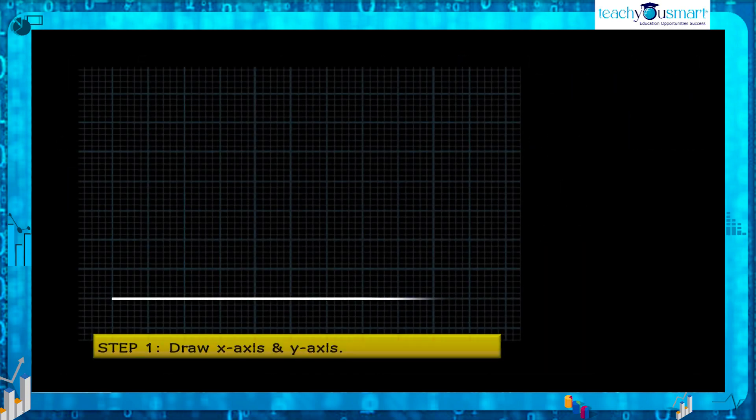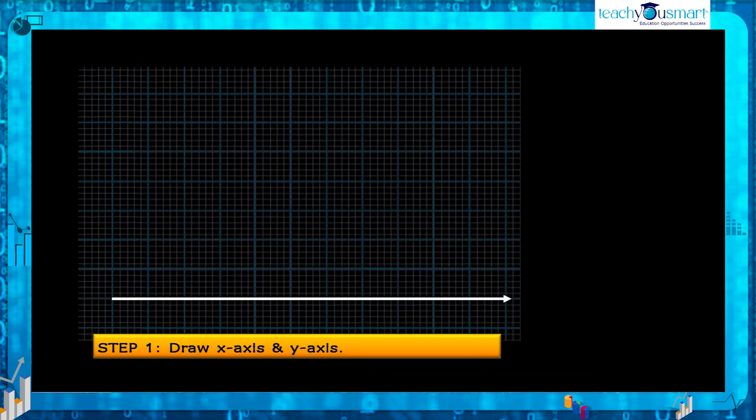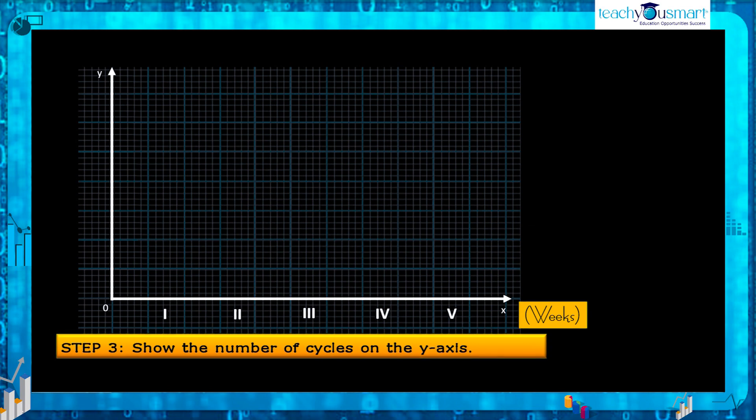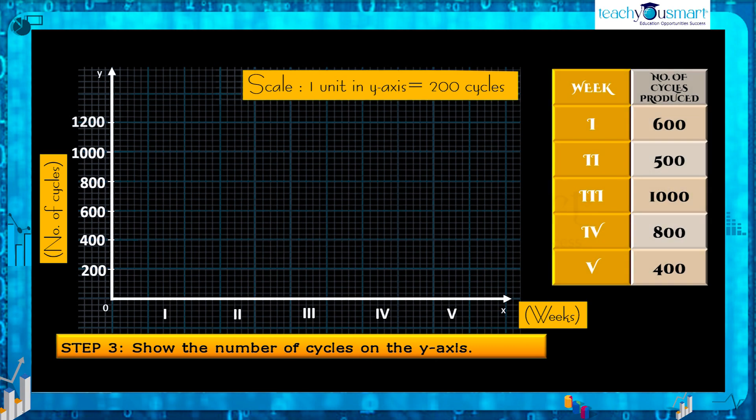First draw the x-axis and y-axis. Then mark various weeks on the x-axis and the number of cycles on the y-axis. Choose the convenient scale to represent numerical data correctly. Here we can take the scale as one unit equals 200 cycles as most of the numbers are multiples of 200.